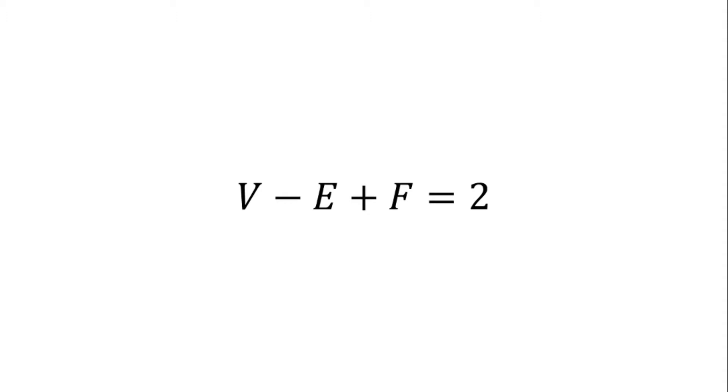This looks like an arbitrary property and raises some questions. Why not v plus e plus f? Why is equal to 2? Why do all polyhedron satisfy it? And is there some deeper meaning behind it? In this video, I'll answer these questions using a single beautiful proof.